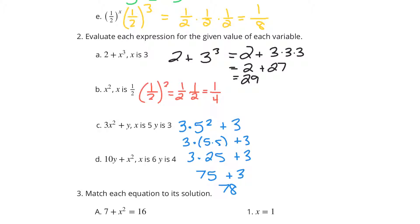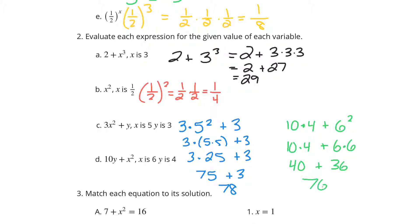In D, we have 10y plus x squared, if x is 6 and y is 4. So 10 times y is 4 — pay attention to that — plus 6 squared. 10 times 4, plus 6 times 6. 10 times 4 is 40, and 6 times 6 is 36, and 40 plus 36 is 76.